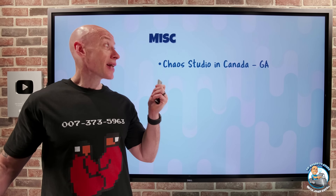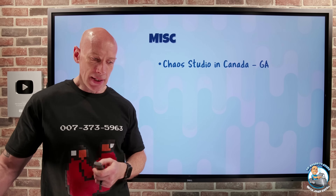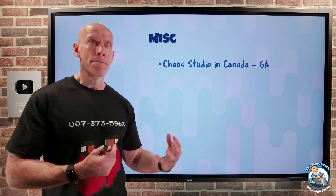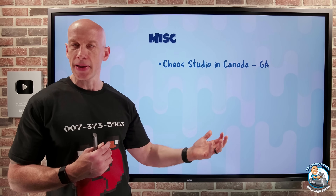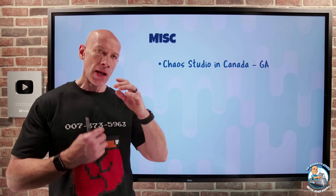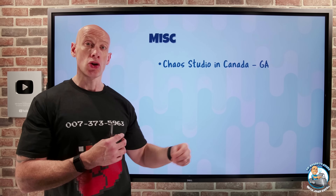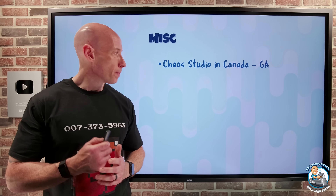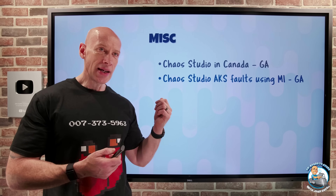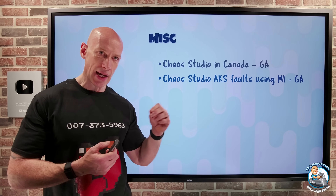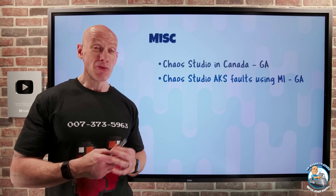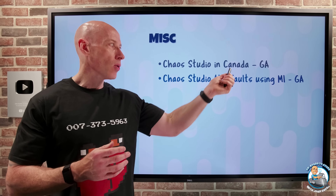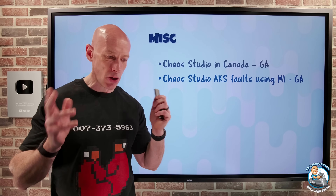Miscellaneous: Chaos Studio is now GA in Canada Central. Chaos Studio lets you create experiments that inject faults — an availability zone being unavailable, a VM running at 100% CPU, loss of connectivity — so you can verify that your resiliency features work as intended. You can now use that in Canada Central. Additionally, if you're using the Azure Kubernetes Service faults in Chaos Studio, previously it required local authentication with Kubernetes, but now it supports managed identity. Managed identity is linked to the Azure resource with no secret to store or maintain, so your Chaos Studio can inject AKS faults with no secrets required.